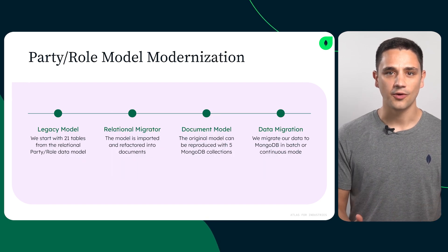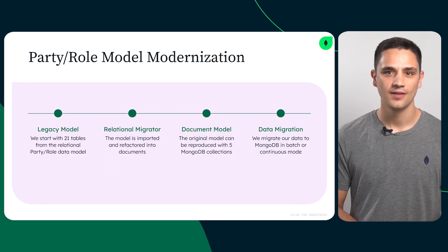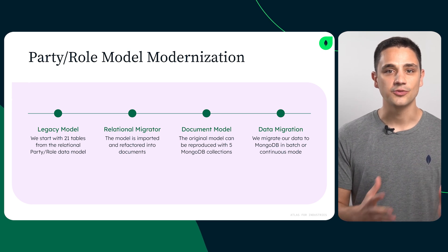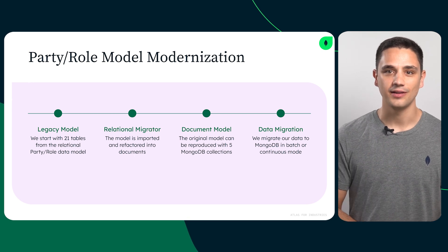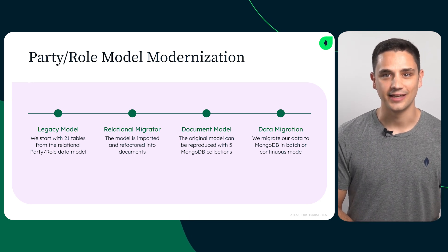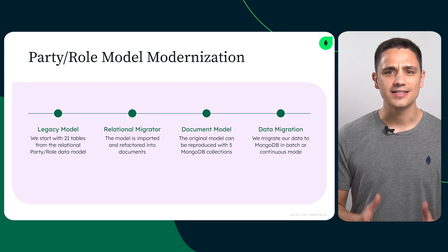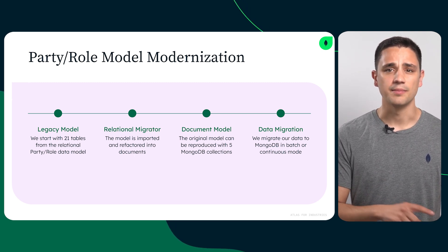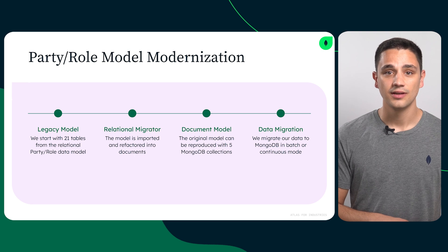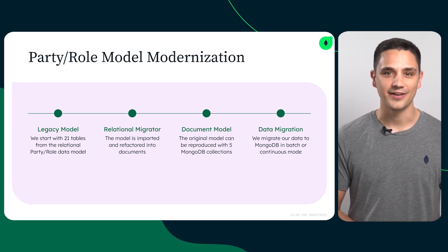Bringing relational models to the domain space is easier than ever with Relational Migrator. We can connect the original schema with 21 tables to Relational Migrator, refactor our entities into a lean 5-collection document model, and immediately migrate data to MongoDB. Relational Migrator can assist you with all the phases of your data migration journey: schema modeling, data migration, and even refactoring your existing app code with the power of Generative AI.